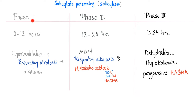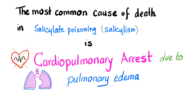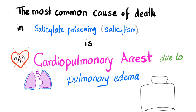Phases of salicylate poisoning — doctors creatively call them 1, 2, and 3. Phase 1 (0–12 hours): hyperventilation leading to respiratory alkalosis. Phase 2 (12–24 hours): mixed respiratory alkalosis and metabolic acidosis. Phase 3 (more than 24 hours): dehydration, hypokalemia, and progressive acidemia. The most common cause of death in salicylate poisoning is cardiopulmonary arrest due to pulmonary edema. When pharmaceutical companies print 'keep out of the reach of children,' they're not joking — it's genuinely good advice.